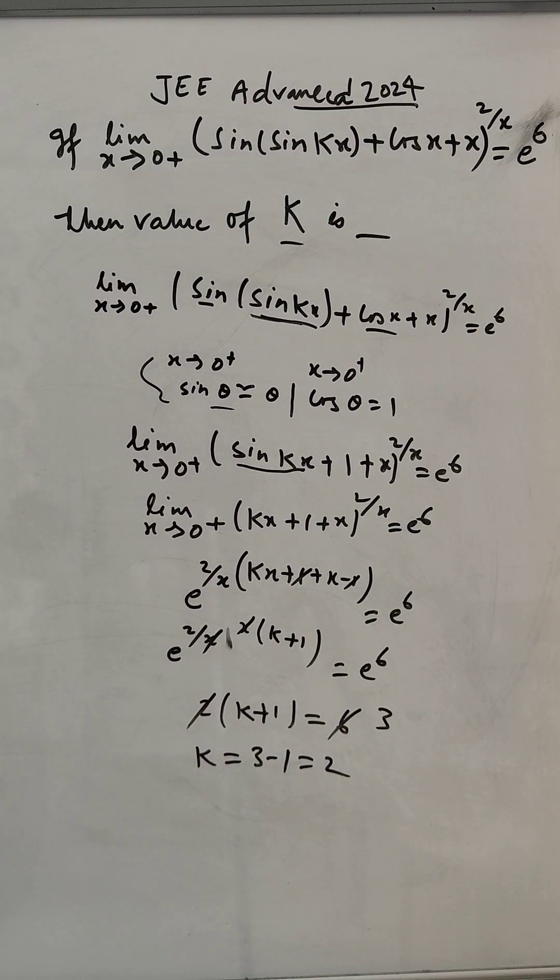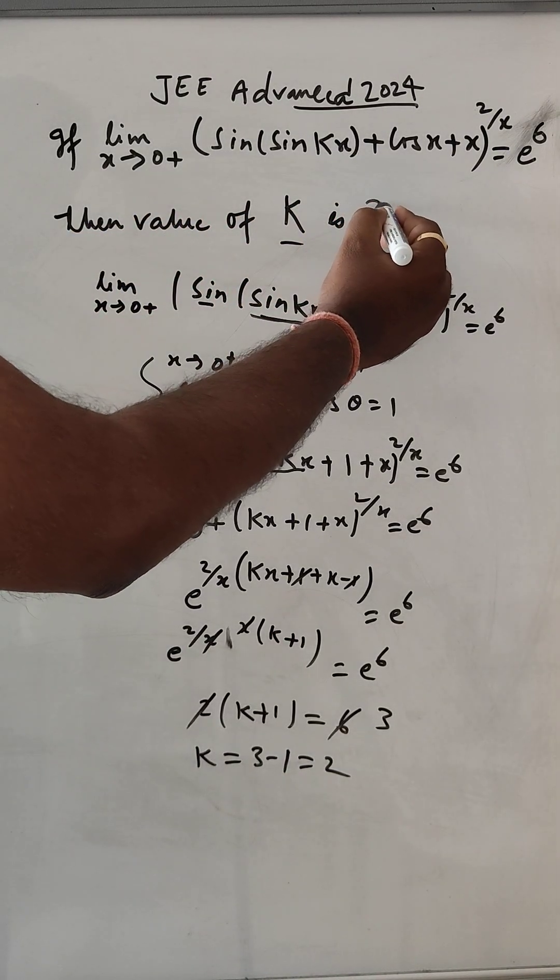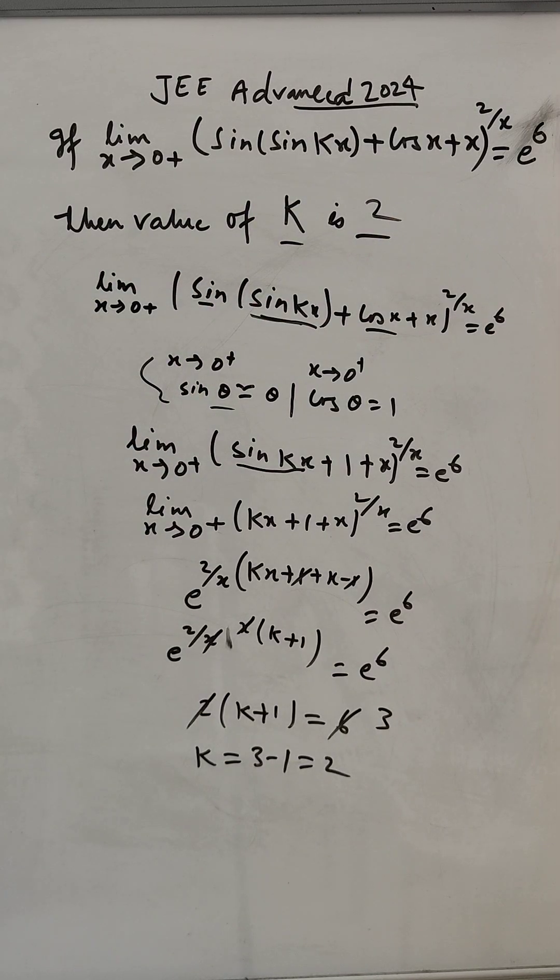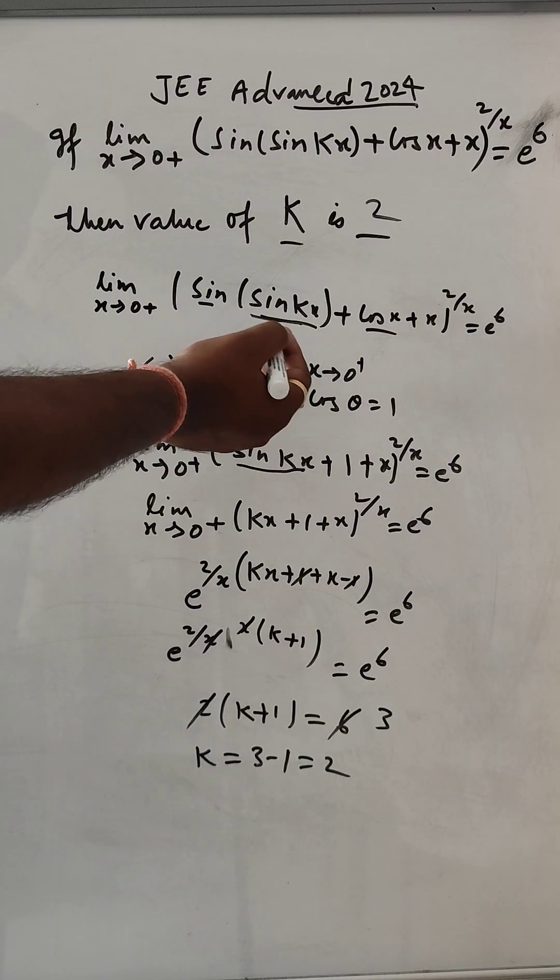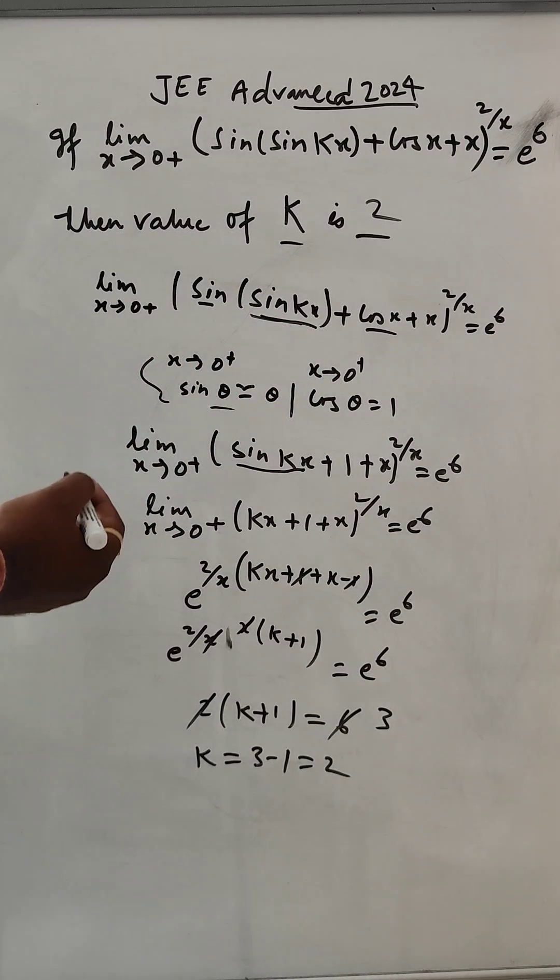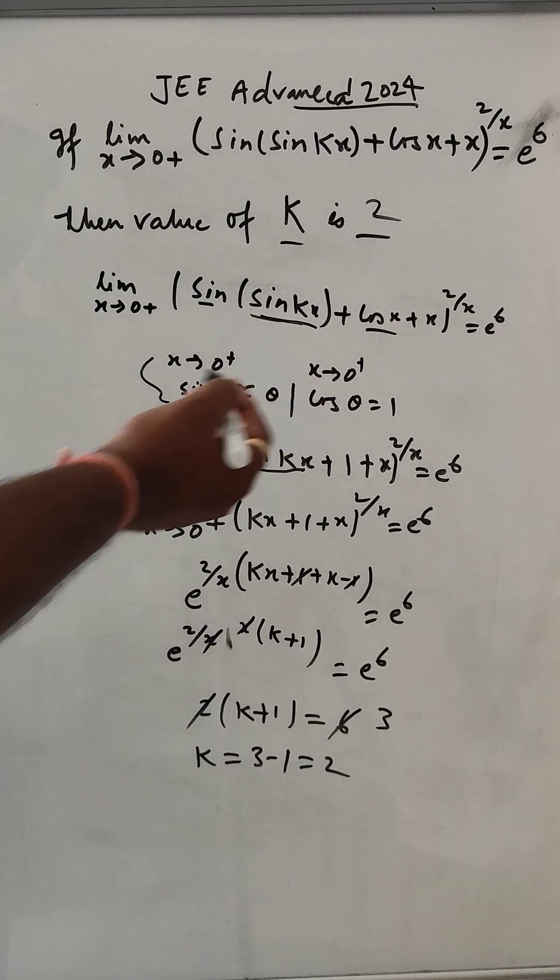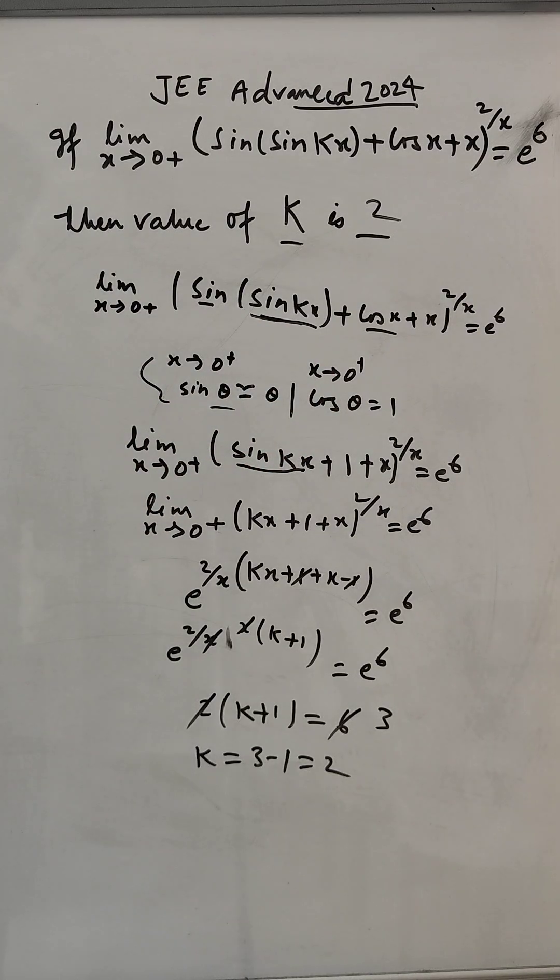So 2 times this will be 3, then k equals 3 minus 1 equals 2. The value of k is 2. We can solve this very easily. We have to visualize the problem and know the formulas: when sine tends to zero (θ near zero), this value will be θ only, and cos(0) equals 1. Thank you for watching, please like and subscribe.